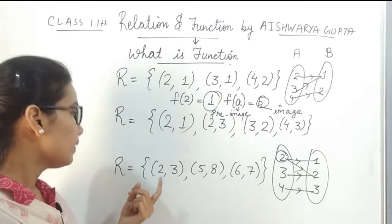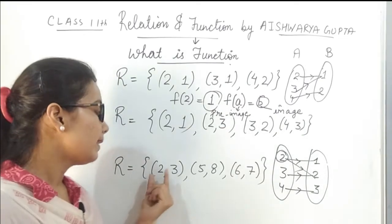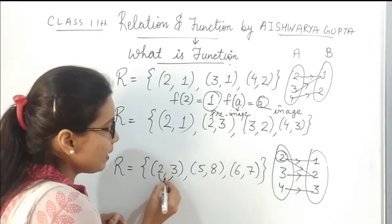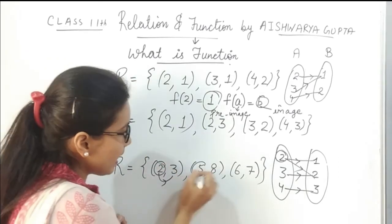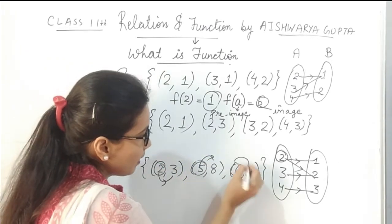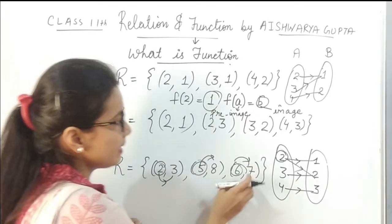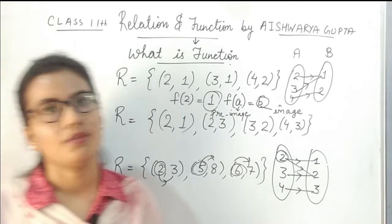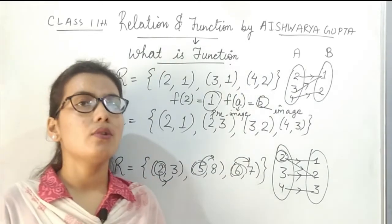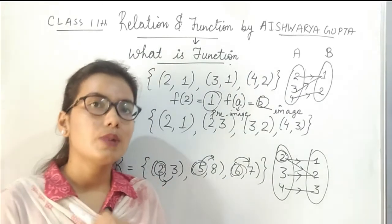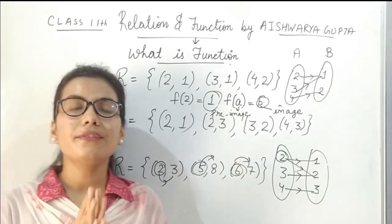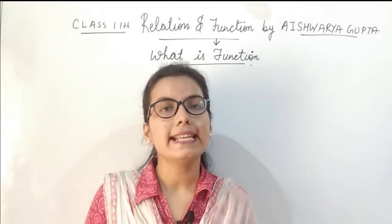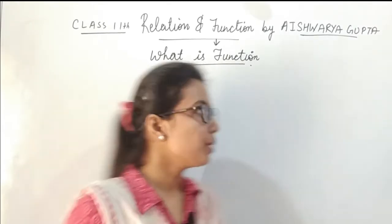And for the third example, we can see from the example itself that every element of set A has a unique image — 3, 8, 7. So therefore, this relation is a function. I hope you now understand what a relation is and what the difference is between a relation and a function.